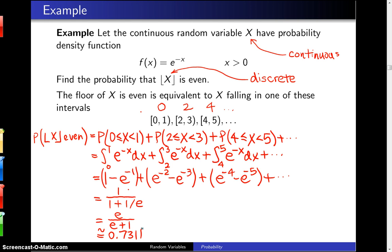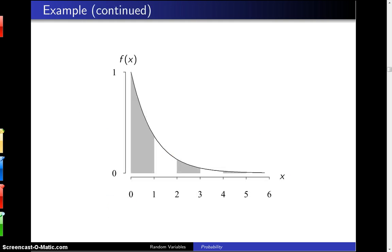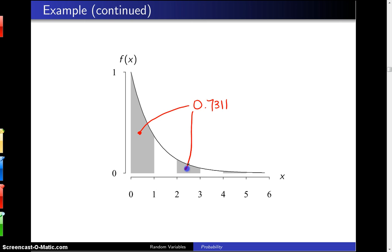If you want to see the geometry behind this problem, I used R to plot the shaded areas that correspond to getting the floor of x being even. If you were to add up all of these shaded areas — which go all the way out to infinity — you will get about 0.7311.